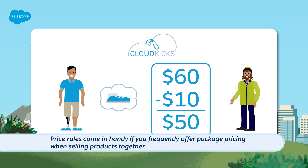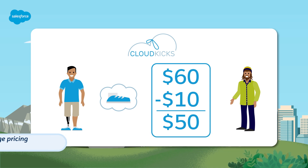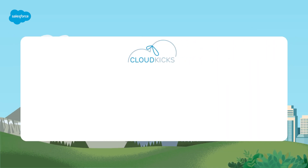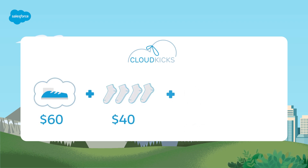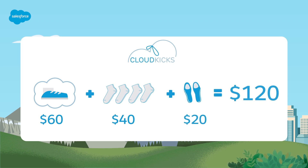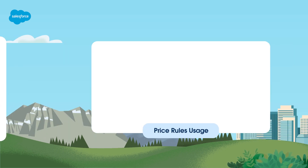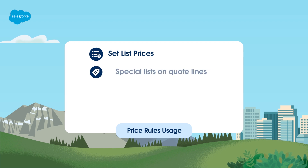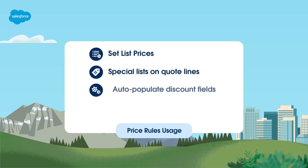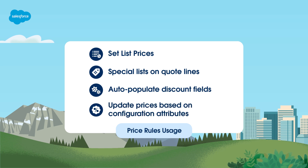Price rules also come in handy if you frequently offer package pricing when selling products together. At Cloud Kicks, you offer a package with your signature sneakers, four pairs of socks and a set of sole inserts. The total value is $120, but you offer a package price of $100 when sold together. With price rules, you can adjust the price automatically any time a customer buys this package. You can also use price rules to set list prices or special lists on quote lines, auto-populate discount fields, and update prices based on configuration attributes such as pick list fields.